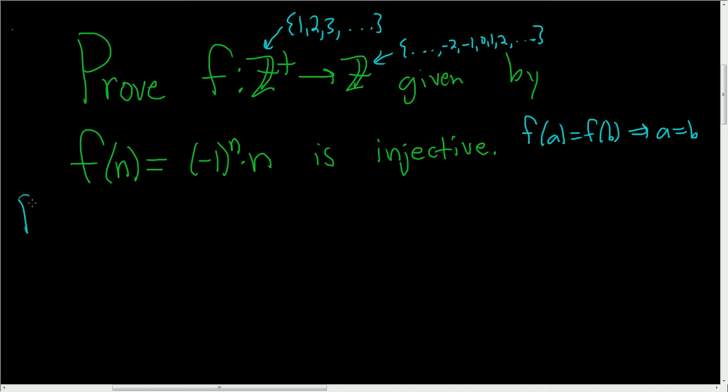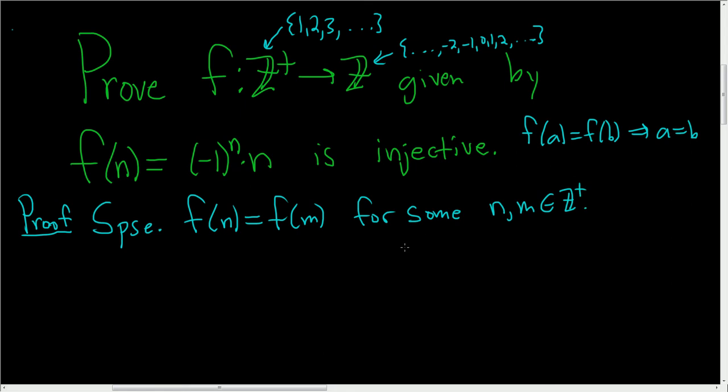Let's do the proof. Since we have integers, let's use n and m. Suppose f(n) = f(m) for some n, m in Z⁺. These are positive integers, and that's actually going to matter. We're going to use that fact.